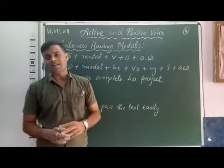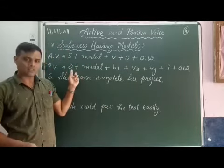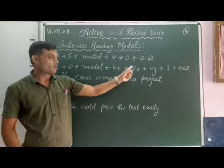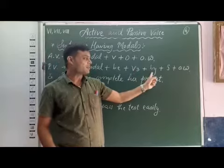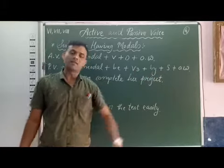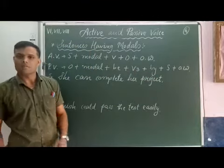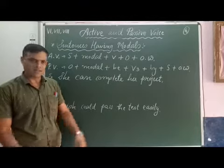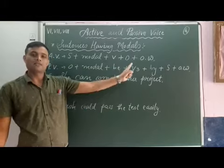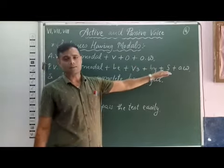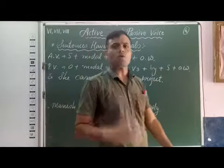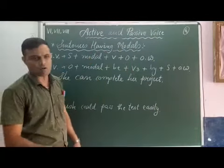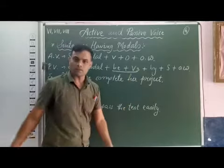Now, passive voice sentence structure: object, modal, be, V3, by, subject, and other words. In passive voice sentence structure: first object, then modal, after that be, then V3, then by, then subject and other words. In passive voice sentence structure, we always use the 'be' form and V3.